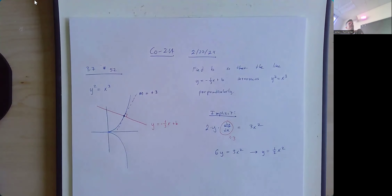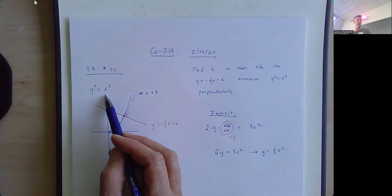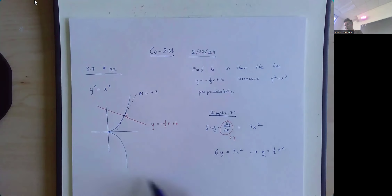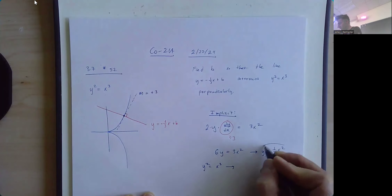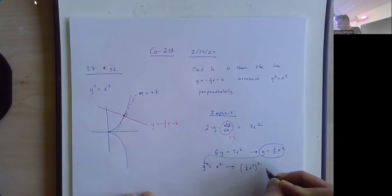That equation alone isn't enough — the point can be (0,0), (2,2), (4,8), many things. We also need the point to satisfy y squared equal to x cubed. So we'll substitute y equal to 1/2 x squared into y squared equal to x cubed, giving us (1/2 x squared) squared equal to x cubed.